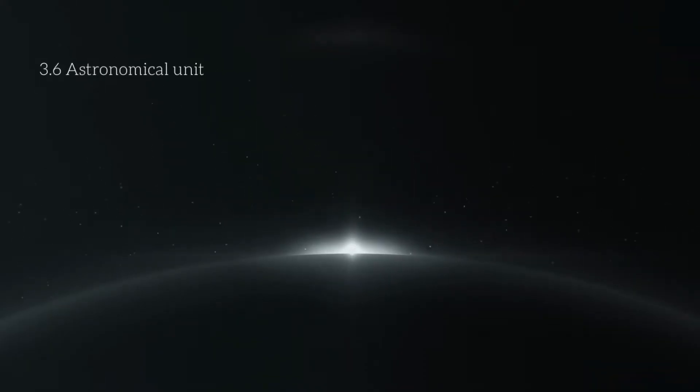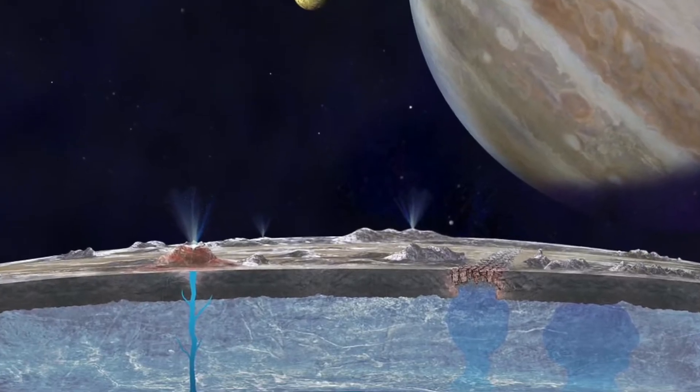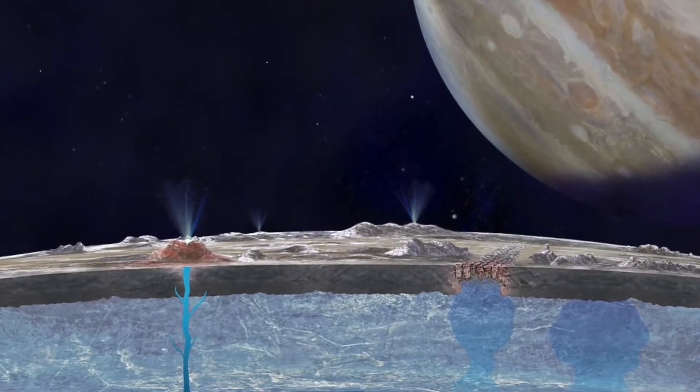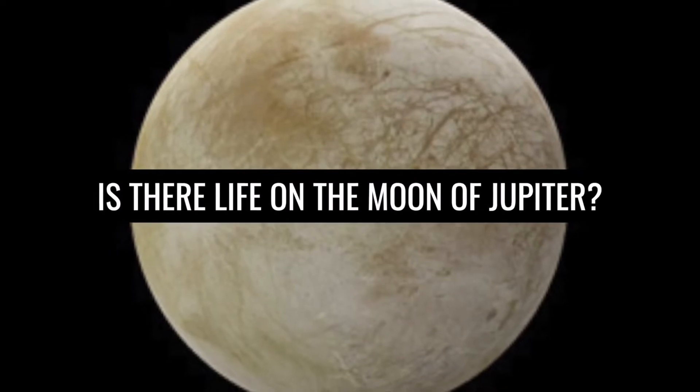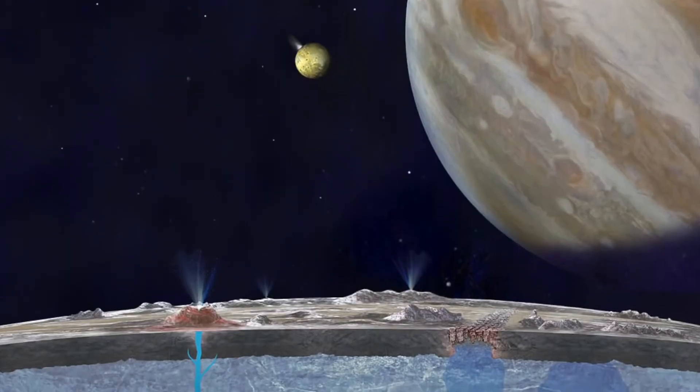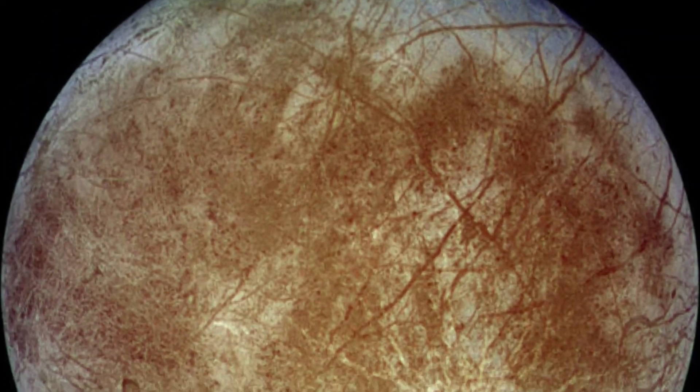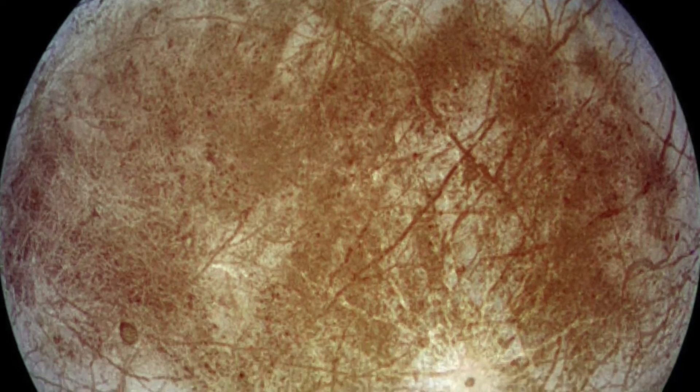Voyager 2 then came near Europa. This moon, unlike Jupiter, was covered with a crust of ice, and beneath it was a liquid ocean. Do you know what this means? That life could exist here. Moreover, Voyager also captured its cracks. The two Voyagers had come across and observed the gas giant several times.